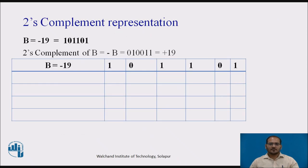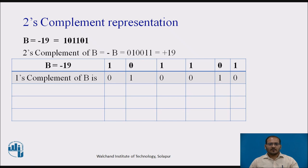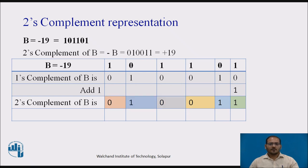Let us see the 2's complement representation. Consider B as minus 19; its binary value is 1-0-1-1-0-1. We need to represent plus 19 in 2's complement form. First, calculate the 1's complement of B: 0-1-0-0-1-0-1-0, then add 1. Performing the addition gives 1-0-0-0-1-0, so the 2's complement of B is 0-1-0-0-1-1, which is plus 19.